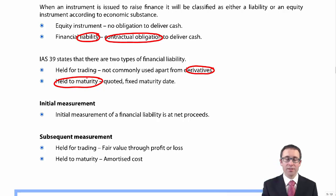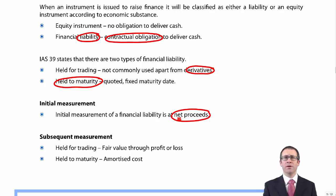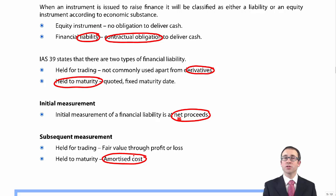How do we measure it? You measure it initially at your net proceeds - that's your proceeds from issue deducting any directly attributable transaction costs. Then subsequently, as held to maturity, it will be at amortised cost. We've seen amortised cost before from financial assets. Essentially, a financial liability is where you issue the finance, and a financial asset is the person who has provided the finance, such as the investor or the bank. The treatment is the same in both sets of books for held to maturity, but it's just the mirror image.